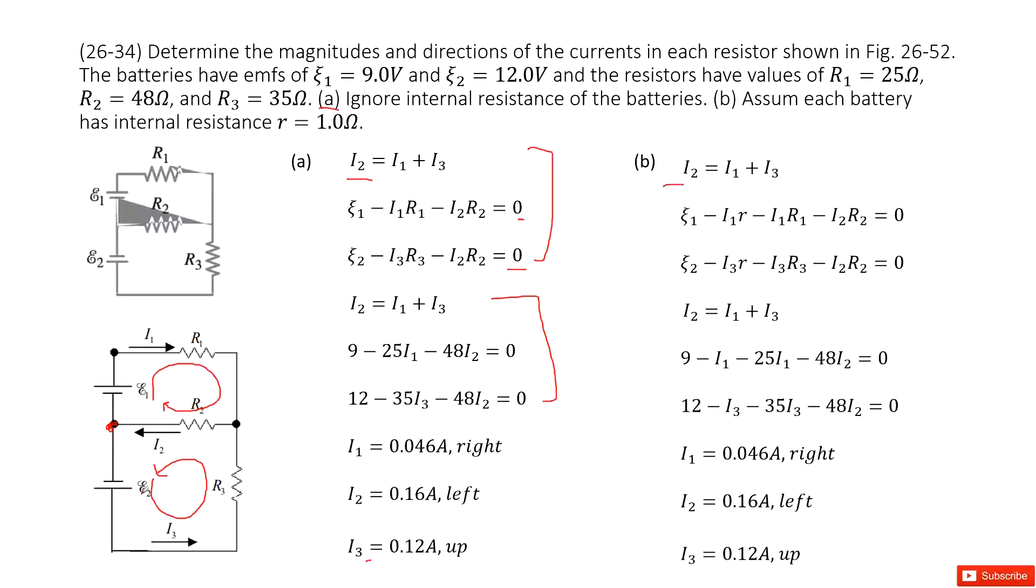so the current flows in I2 equal to current flows out I1 plus I3. And then for the first loop, when the current goes through the batteries, we can see there is the EMF for battery 1, and also the current goes through the internal resistance for battery, so minus I1 times r. So we just need to replace epsilon 1 as epsilon 1 minus I1 times r.